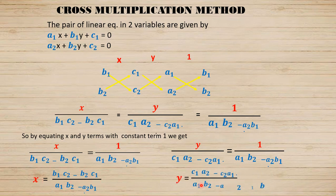The formula for the cross multiplication method gives: x = (b1c2 − b2c1) / (a1b2 − a2b1) and y = (c1a2 − c2a1) / (a1b2 − a2b1). In this way we can solve the pair of linear equations in two variables using the cross multiplication method to get the values of x and y.